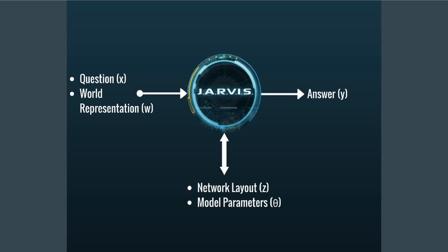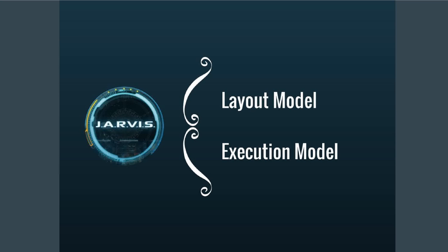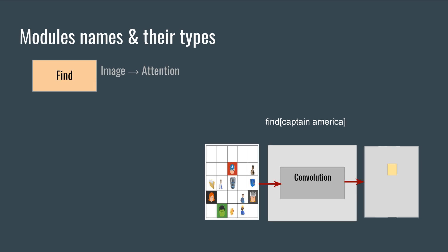Let's look at the mechanism in detail. For finding the answer, Jarvis has to decide on a network layout for the neural network modules and their parameters. Jarvis first chooses a layout network of modules for the given question and then applies it to the world representation to find the answer. The find module convolves every position of the world representation with a weight vector to produce a heatmap called attention.